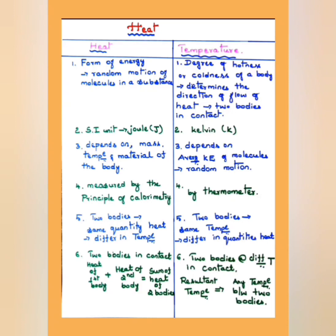Moving to the measurement of heat and temperature: heat is measured by the principle of calorimetry, and the calorimeter is the device used to measure the heat of a substance. In the case of temperature, the thermometer is an instrument used to measure the temperature of a given object.